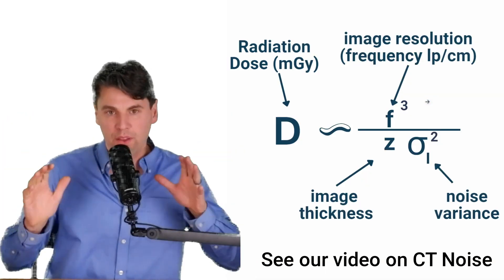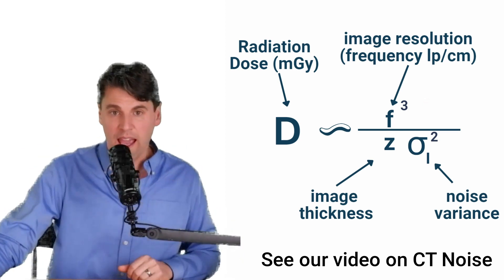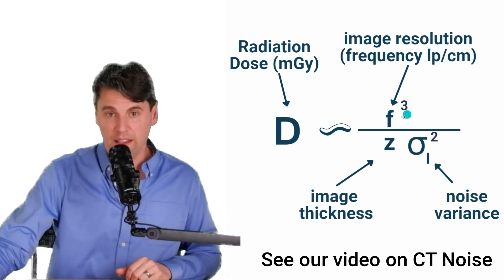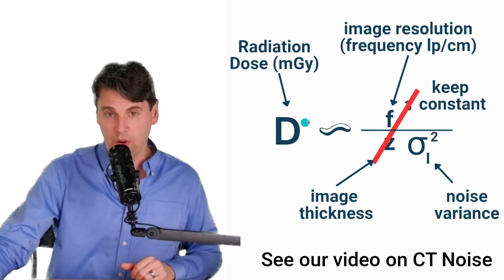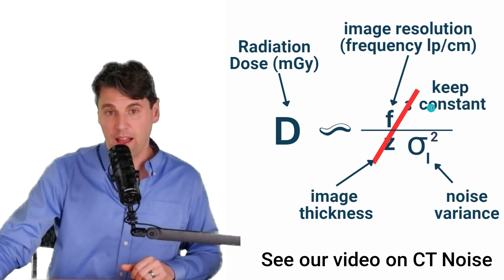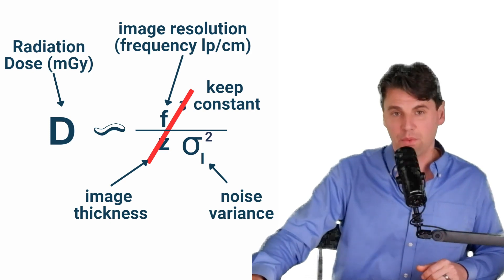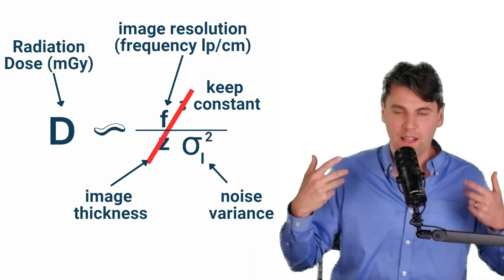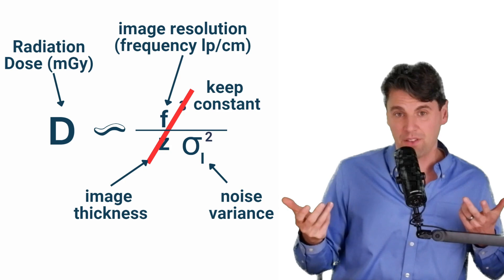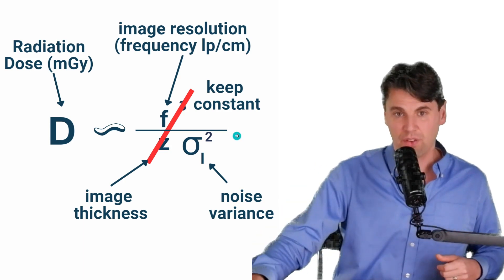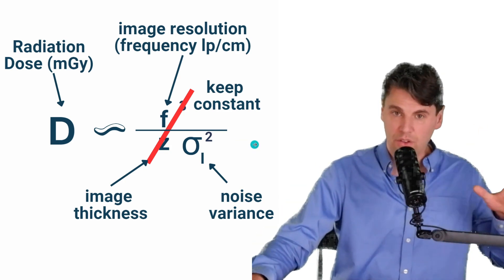If you remember, we talked about the dose in the CT system, and it depended strongly on things like the in-plane spatial resolution, the Z resolution. If we leave those two things constant, though, then the dose actually depends on one over the variance in the image. Remember, variance is actually just the square of the standard deviation. When we talk about noise, a lot of times we're talking about the standard deviation, but the variance is just the square of that. So that's the dose term.